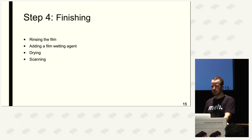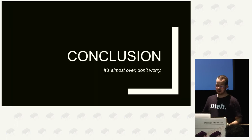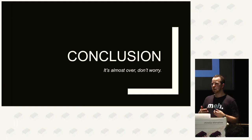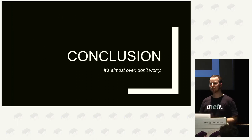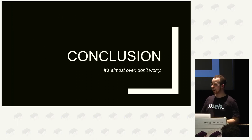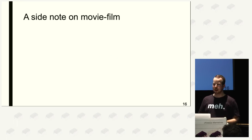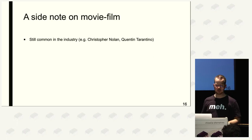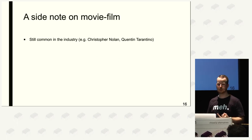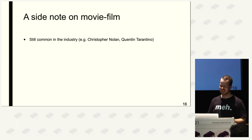So: we have film, we shot it, we developed it, we scanned it, we have an image. But there's still time left in my talk. I don't just want to talk about the technical things — I also want to talk about why some people still do this. First, a note: there is not only photographic film, there's also movie film, which works a bit differently. And there are still some directors in Hollywood who use only motion picture film — for example Christopher Nolan and Quentin Tarantino, two of the most prominent examples.